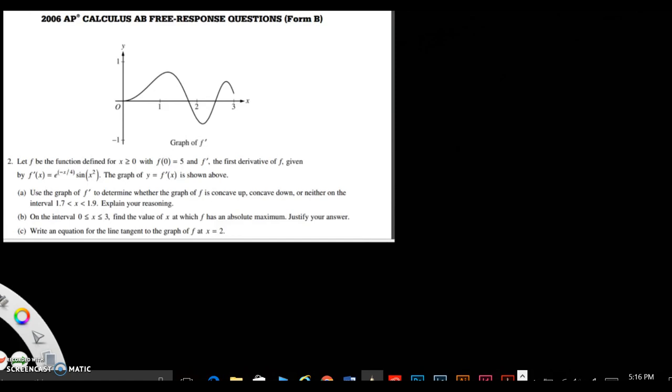So it says, let f be the function defined for x is greater than or equal to 0, f of 0 equals 5. Those initial conditions are always important, so good to underline them. And f prime, the first derivative of f, is given by f prime of x equals e to the negative x divided by 4 sine x squared. The graph of y equals f prime of x is shown above.